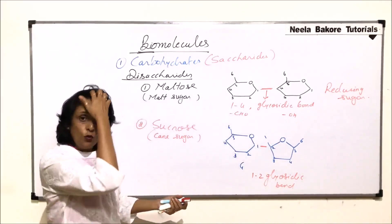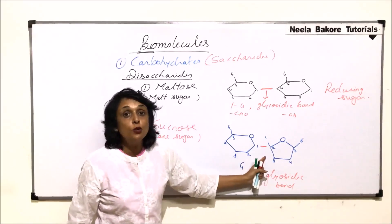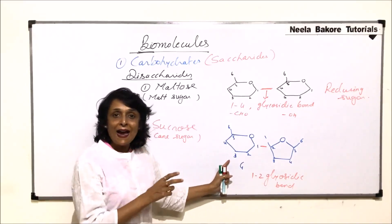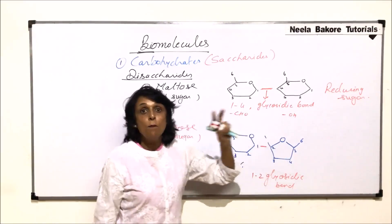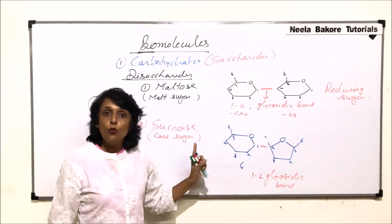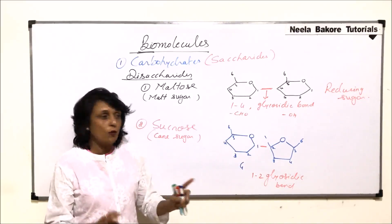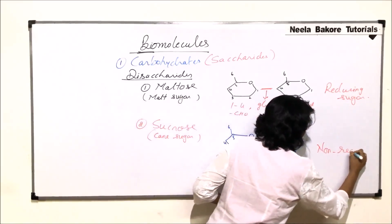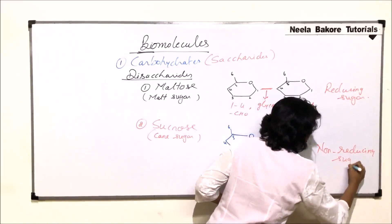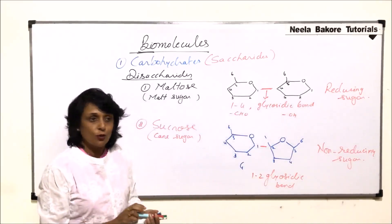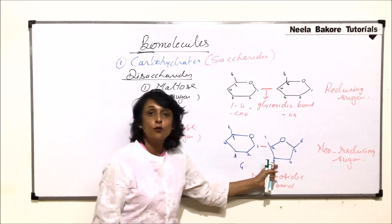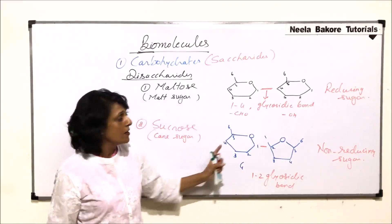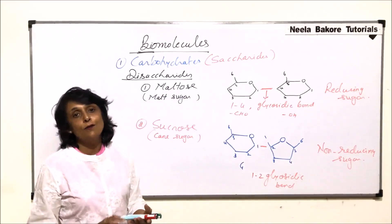Carbon 1 of glucose has an aldehyde and carbon 2 of fructose has a keto group. That means the aldehyde group is gone and the ketone group is also gone. Both the groups because of which glucose and fructose were reducing sugars are gone during bond formation. That is why sucrose is a non-reducing sugar — though it is made up of two reducing sugars. Glucose is individually reducing, fructose is individually reducing, but because both functional groups are lost during bond formation, sucrose is a non-reducing sugar.